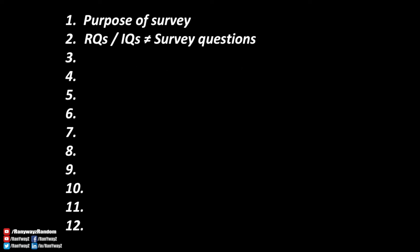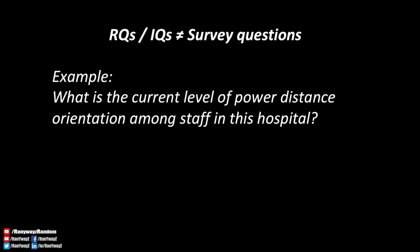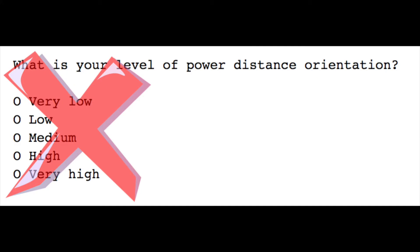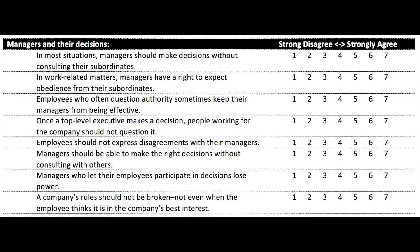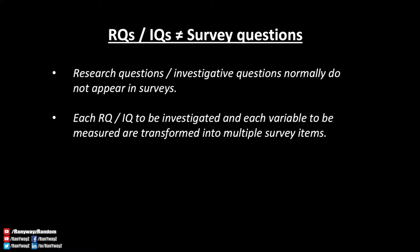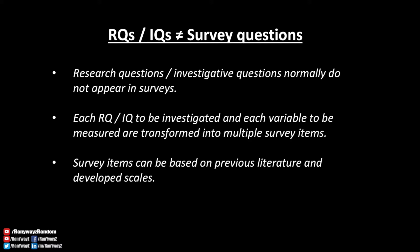Number two: research questions are usually not survey questions. Generally speaking, we do not put the research questions directly into the survey. For example, if one of my research questions is 'What is the current level of power distance orientation among staff in this hospital?', instead of asking respondents that question directly, we would normally use multiple survey items to tap into employees' perception of their own power distance. These multiple survey items are usually based on a previously published scale designed to measure power distance. Each variable we are trying to measure is transformed into multiple survey items on the basis of previous literature and previously published scales. Research questions themselves generally do not directly appear in the survey.